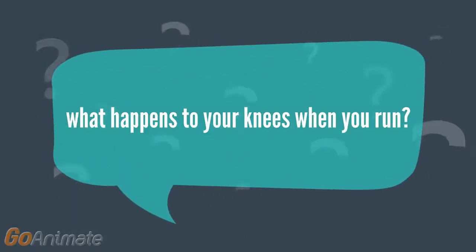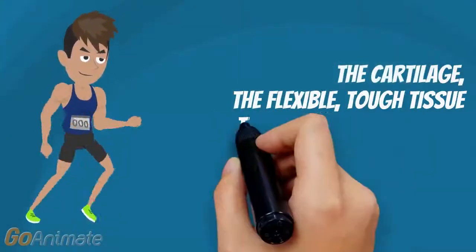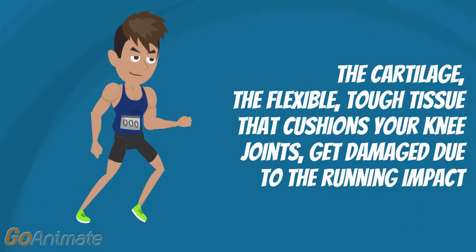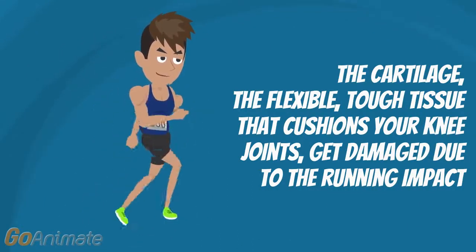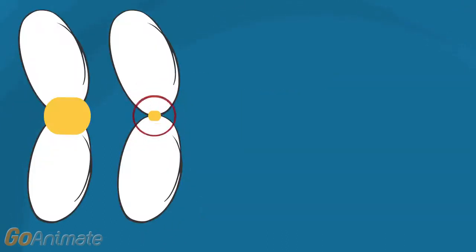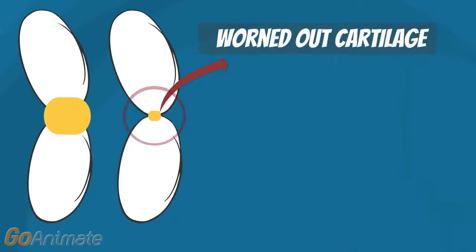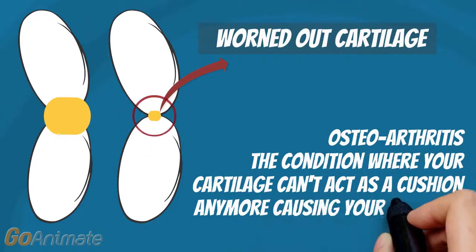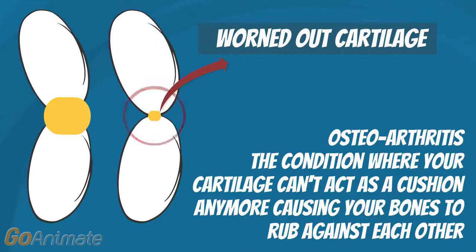What happens to your knees when you run? The cartilage, which is the flexible tough tissue that cushions your knee joints, gets damaged due to the impact of your leg landing and pushing against the ground. And over time, that cushion cartilage eventually leads to painful osteoarthritis, the condition where your cartilage can't act as a cushion anymore, causing your bones to rub against each other and leads to painful swelling, inflammation, and stiffness.